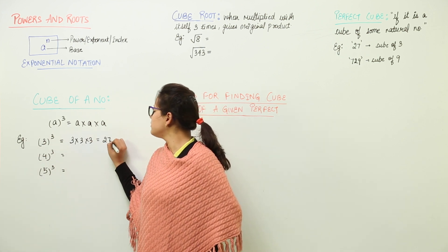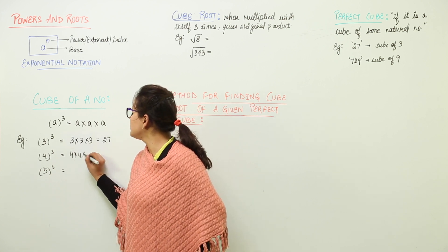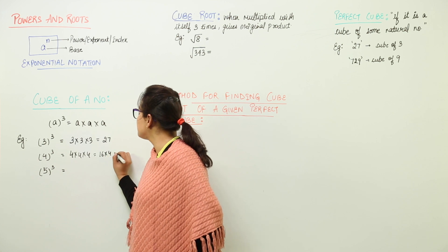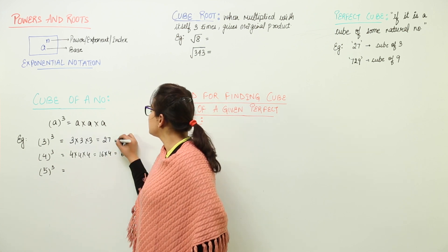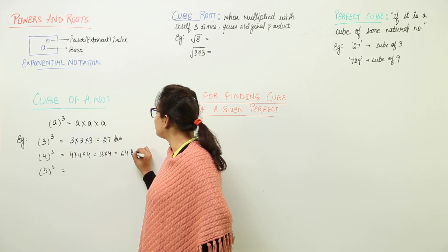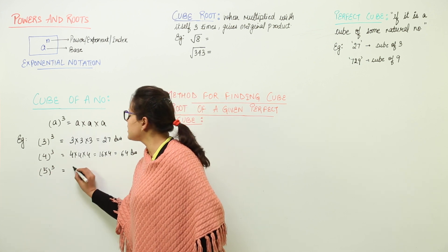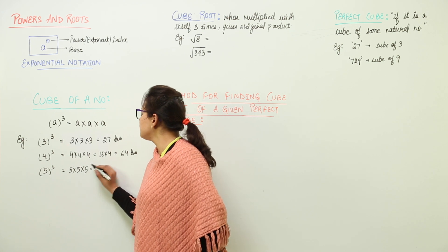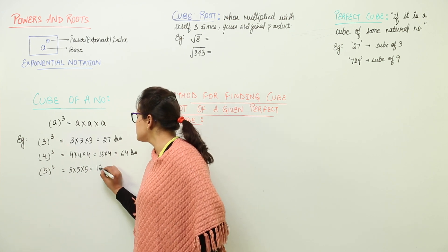9 times 3 is 27. Similarly, 4 cube would be 4 into 4 into 4. That is 4 times 4 is 16, and 16 times 4 is 64. So these are the cubes of the numbers that are written inside the brackets. Now 5 into 5 into 5 would give you 25, 25 times 5 is 125.